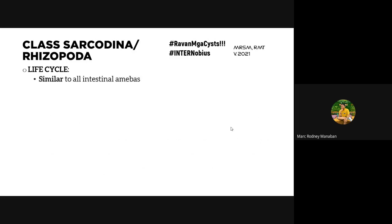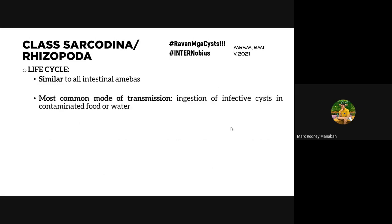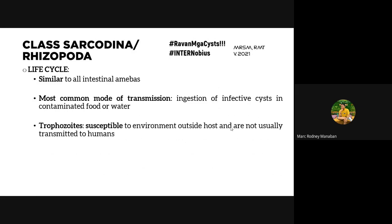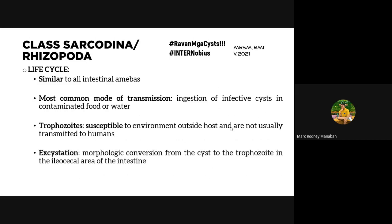The life cycle of intestinal amoeba is similar across species. The most common mode of transmission is ingestion of infective cysts in contaminated food or water. Trophozoites are very sensitive to the environment — once passed out of the host, they are destroyed within minutes and are unlikely to be transmitted. Cysts, however, have a protective wall and can withstand the environment.